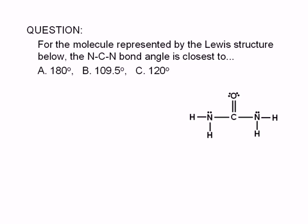For the molecule represented by the Lewis structure shown here, the N-C-N bond angle is closest to A, 180 degrees, B, 109.5 degrees, or C, 120 degrees.